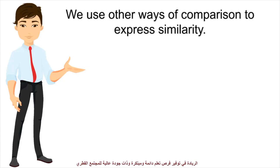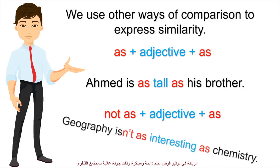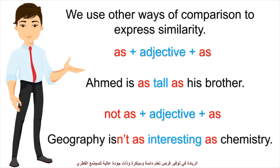In English, we also have other ways of comparison to express similarity. AS + adjective + AS: for example, Ahmed is as tall as his brother — that means Ahmed and his brother have the same height. For dissimilarity, NOT AS + adjective + AS: for example, geography isn't as interesting as chemistry.